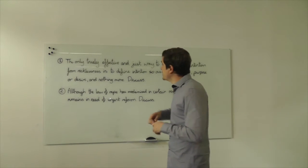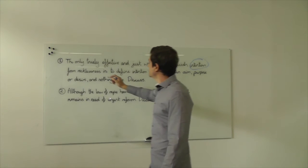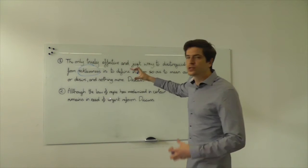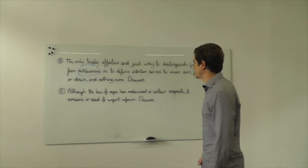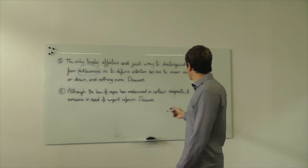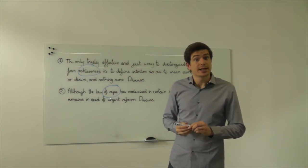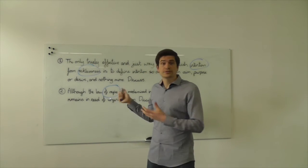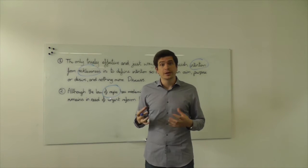So you basically skim read the question, you see the words intention, recklessness. Okay so this essay question is broadly about defining mens rea terms. You might then look at the second question and think okay we're looking here at the law of rape so the topic is in terms of sexual offences and particularly the offence of rape. So again you identify an essay by the topic that's outlined.